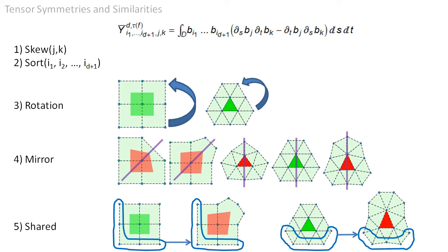Swapping the last two indices inverts the sign. The integral is invariant under permutation of the first D plus 1 factors. For regular facets, there is a rotational symmetry.